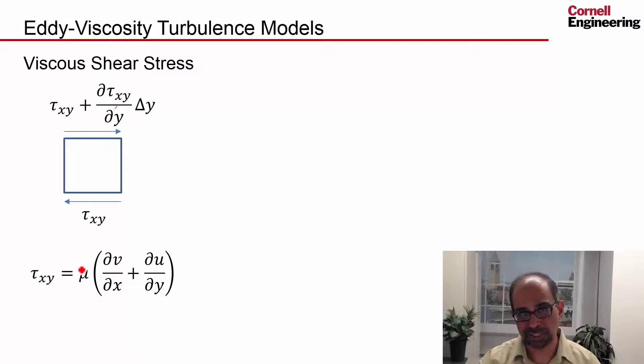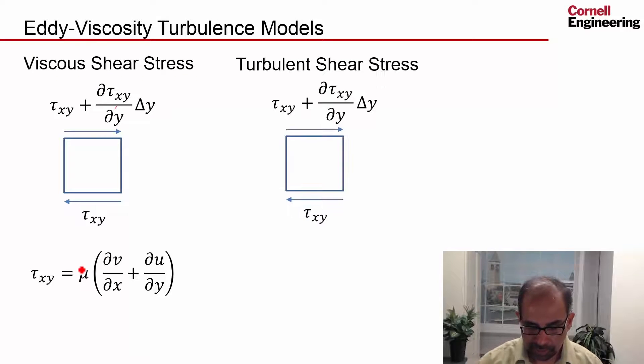Now you write the turbulent stresses or the Reynolds stresses in an analogous fashion. In addition to that viscous shear, you have a shear due to the turbulent fluctuations. So this is due to turbulence. Let me put a superscript T here.